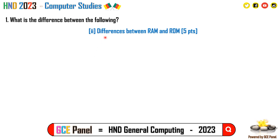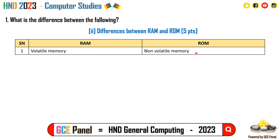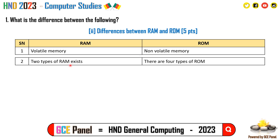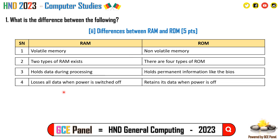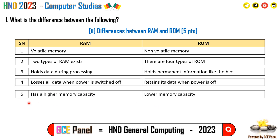Section C, Question 1b: Differences between RAM and ROM. RAM is volatile memory; ROM is non-volatile memory. There are two types of RAM but four types of ROM. RAM holds data during processing; ROM holds permanent information like the BIOS. RAM loses all data when power is switched off; ROM retains its data when power is off. RAM has higher memory power.